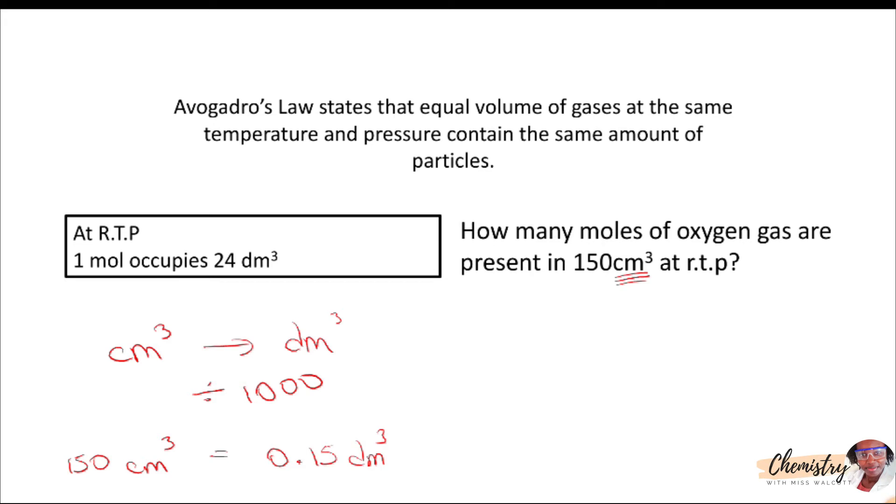Once we have that in dm cubed, we would see how many times we can get 24 from 0.15. This tells us the number of moles present.